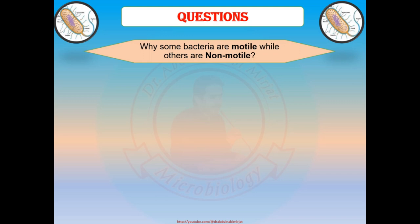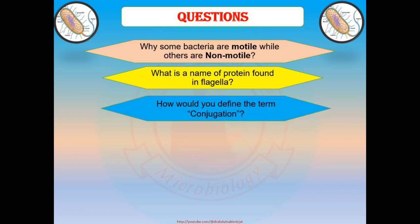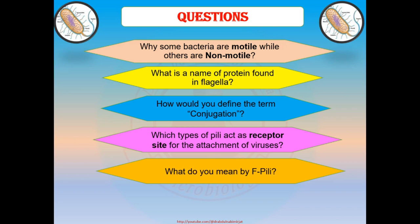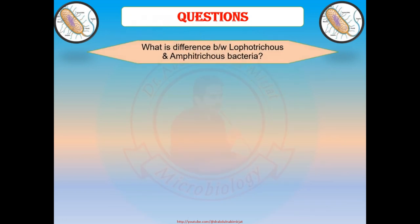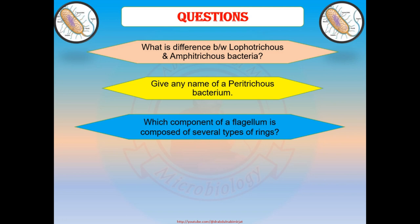Review questions: Why are some bacteria motile while others are non-motile? What is the name of the protein found in flagella? How would you define the term conjugation? Which type of pili act as receptor sites for the attachment of viruses? What do you mean by F pili? What is an axial filament? What is the difference between lophotrichus and amphitrichus bacteria? Name a peritrichus bacterium. Which component of a flagellum is composed of several types of rings?